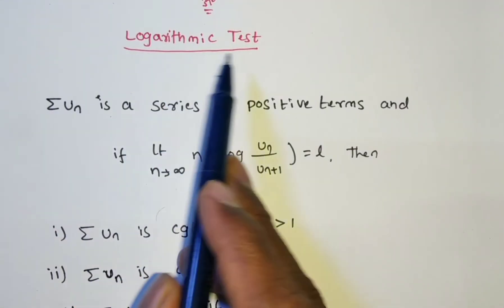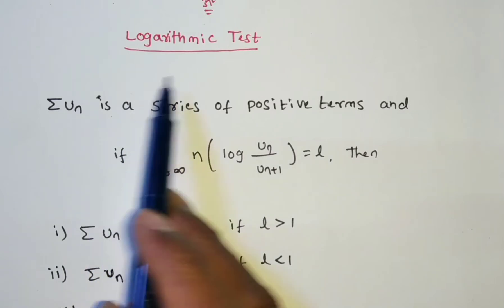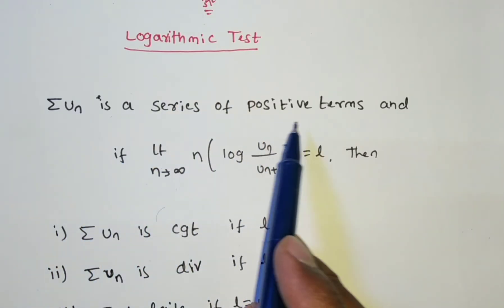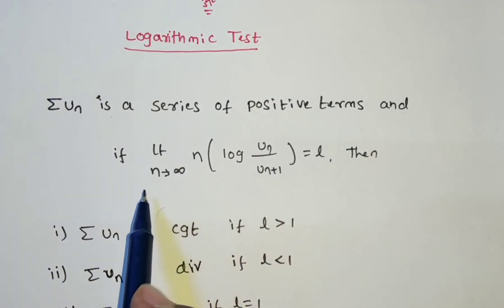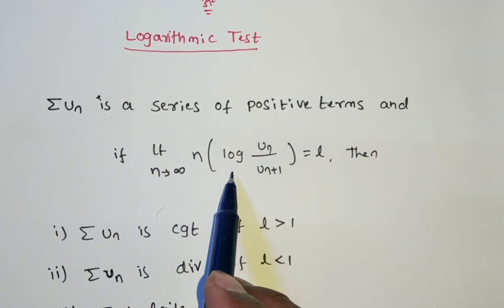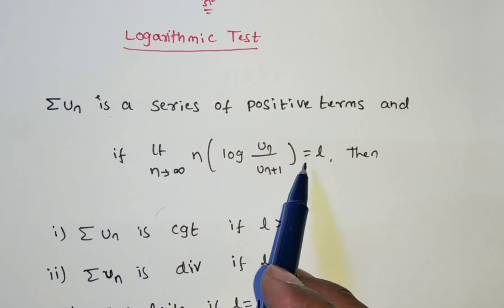Now we are discussing logarithmic test. Statement is: summation u_n is a series of positive terms and if limit n tends to infinite n into log of u_n by u_(n+1) is equal to l.